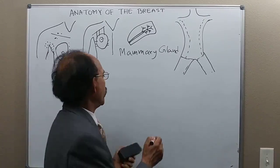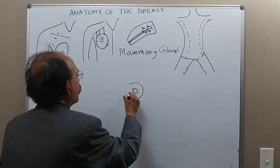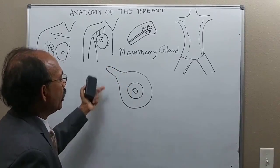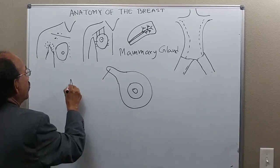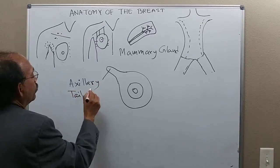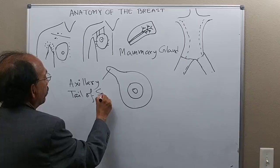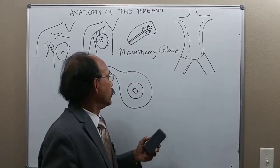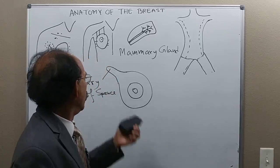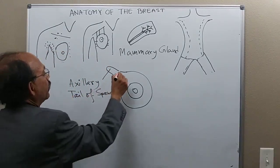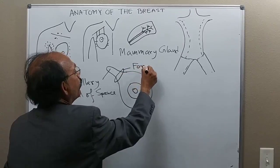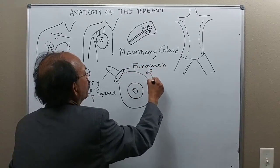The extension of the breast goes to the axilla, towards the apex of the axilla. This is called the axillary tail of Spence. The upper and outer part of the breast extends towards the apex of the axilla. It goes through a foramen in the deep fascia called the foramen of Langer.